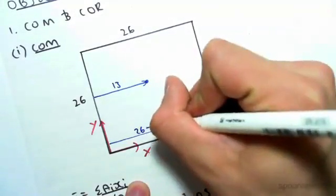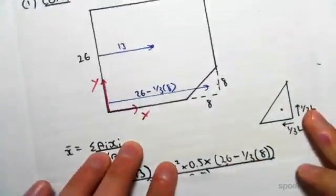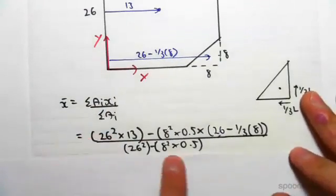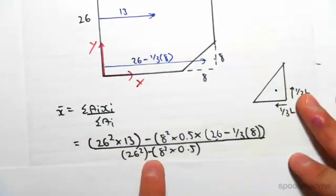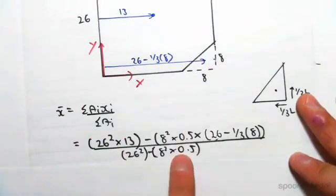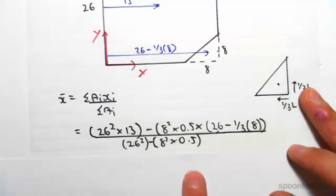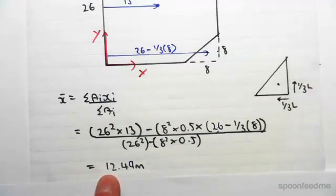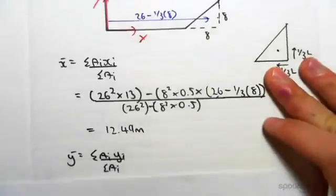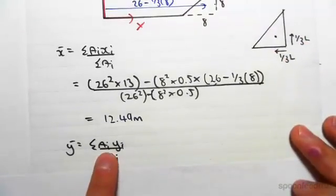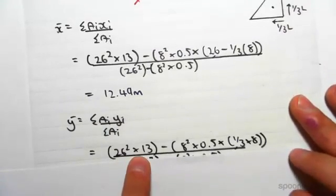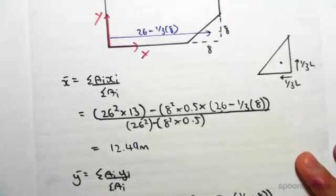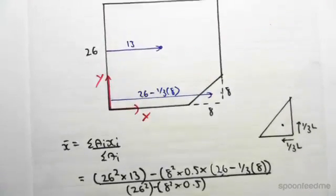We divide by the sum of the areas: 26 squared for the square, minus the triangle area of 8 squared times 0.5. Working that out, we get x-bar equals 12.49 meters. For y-bar, it's a similar formula and process, except now we're using the y-direction. The area is the same: 26 squared, and the centroid distance is 13.